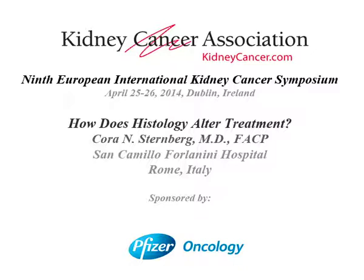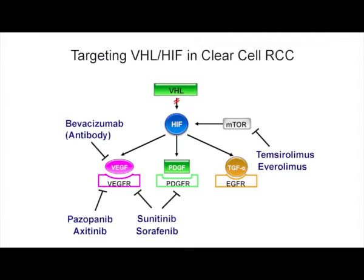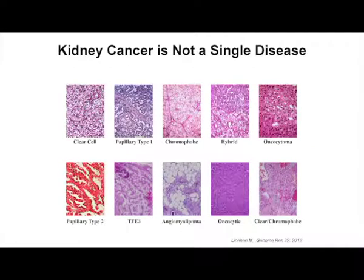It's really a pleasure for me to be here today. I'm sorry that I am changing the topic a little, but it's my wedding anniversary and I really do need to go home. So my topic is how does histology alter treatment? We know that with increasing understanding of VHL and HIF and the pathway and the consequences of VHL mutation, we have many new targeted therapies for patients with clear cell carcinoma of the kidney. However, kidney cancer is definitely not a single disease, and only some 75% of patients actually have clear cell.